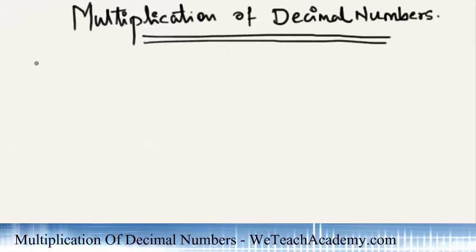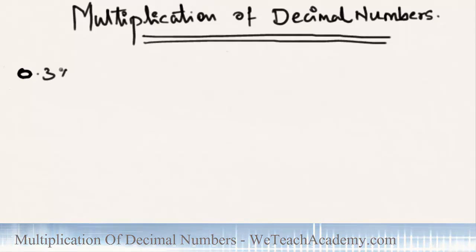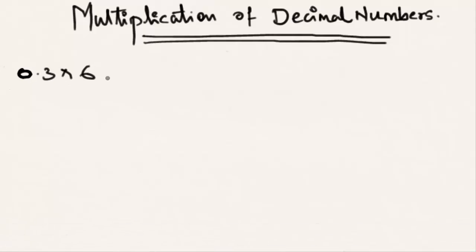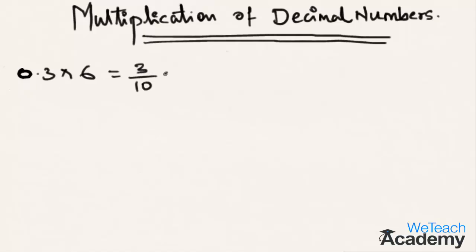Welcome to the presentation on multiplication of decimal numbers. Let me explain with an example. Let us multiply 0.3 with 6. So 0.3 is nothing but 3 by 10, multiplied by 6.